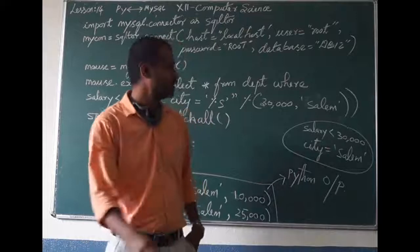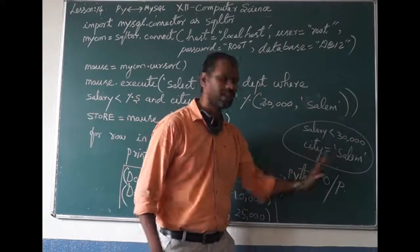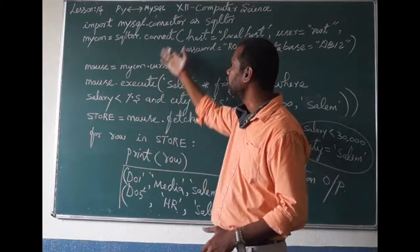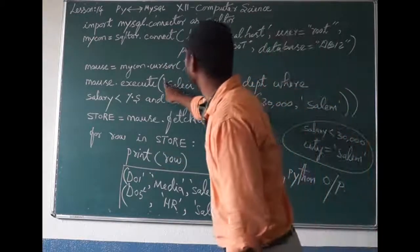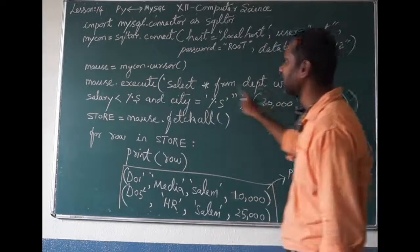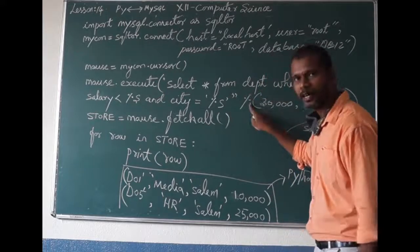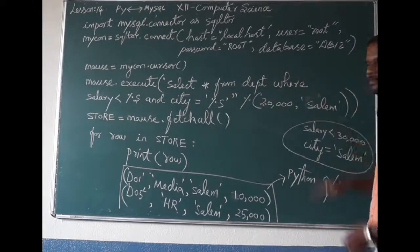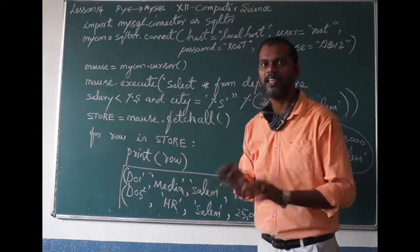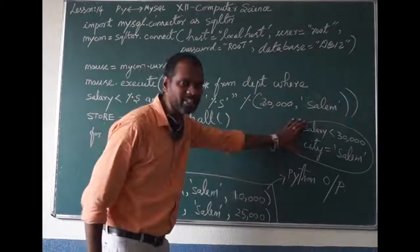Okay students, in the previous video we saw the condition: salary should be less than 30,000 and the city should be Salem. If you run this Python program and press F5 to run, you will get the output. According to the condition, you will get the filtered output.